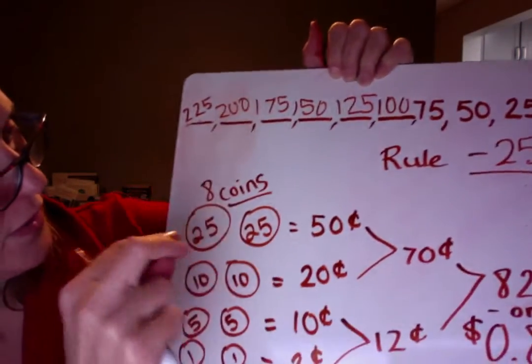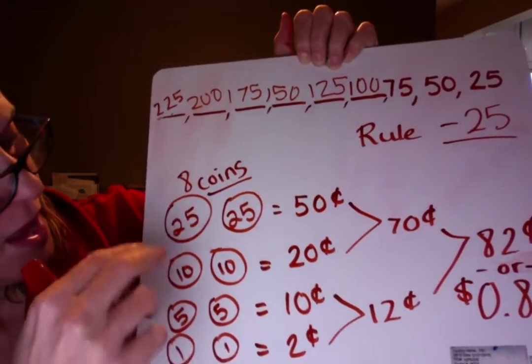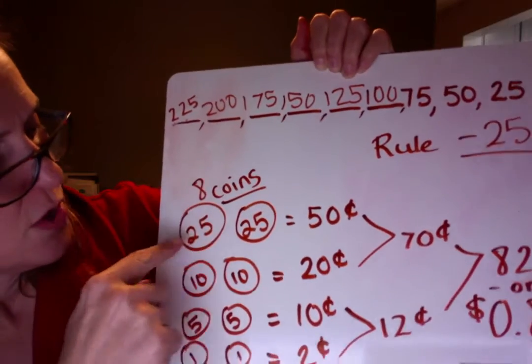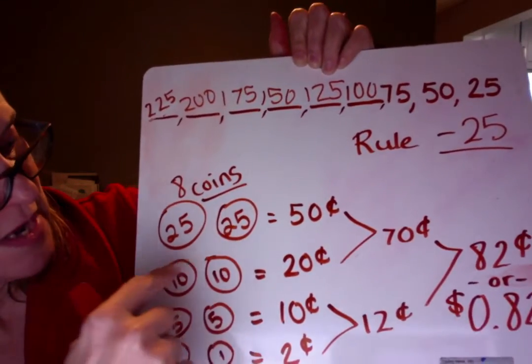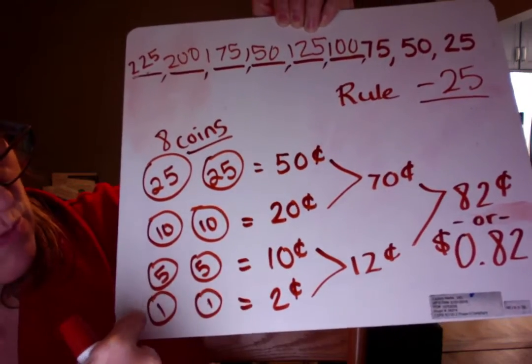And then you had to figure out, we had two quarters, two dimes, two nickels, and two pennies. And that was eight coins all together. So you have to count 25, 50, 60, 70, 75, 80, 81, 82.